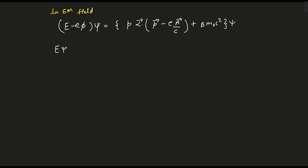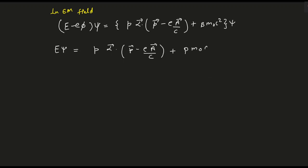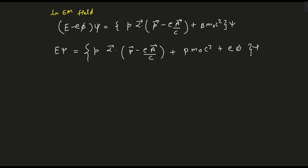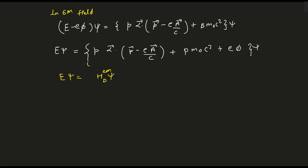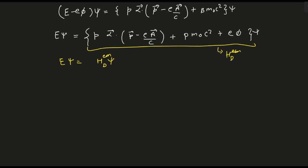To get the Dirac Hamiltonian in the electromagnetic field, we bring the E phi term to the right-hand side, giving: E psi equals [c times alpha dot (p minus eA/c) plus beta m_0 c squared plus e phi] acting on psi. This is now in Hamiltonian form, and this bracketed expression is our Dirac Hamiltonian in the electromagnetic field.